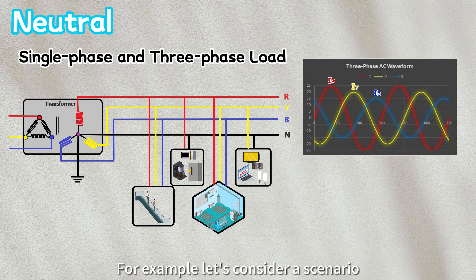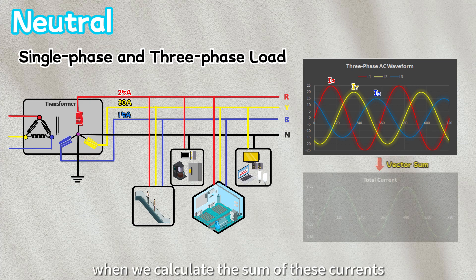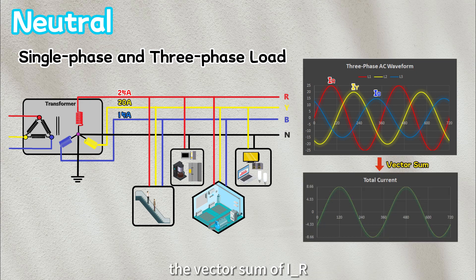For example, let's consider a scenario where phase R carries a peak current of 25 amps, phase Y is at 20 amps, and phase B is at 15 amps. When we calculate the sum of these currents, the vector sum of IR,